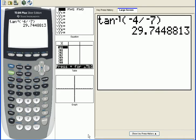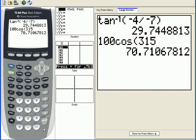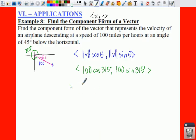So, we can just plug these into our calculator. We're going to say 100 times the cosine of 315. And that gives us a 70.7. So, you're going to have a 70.7.